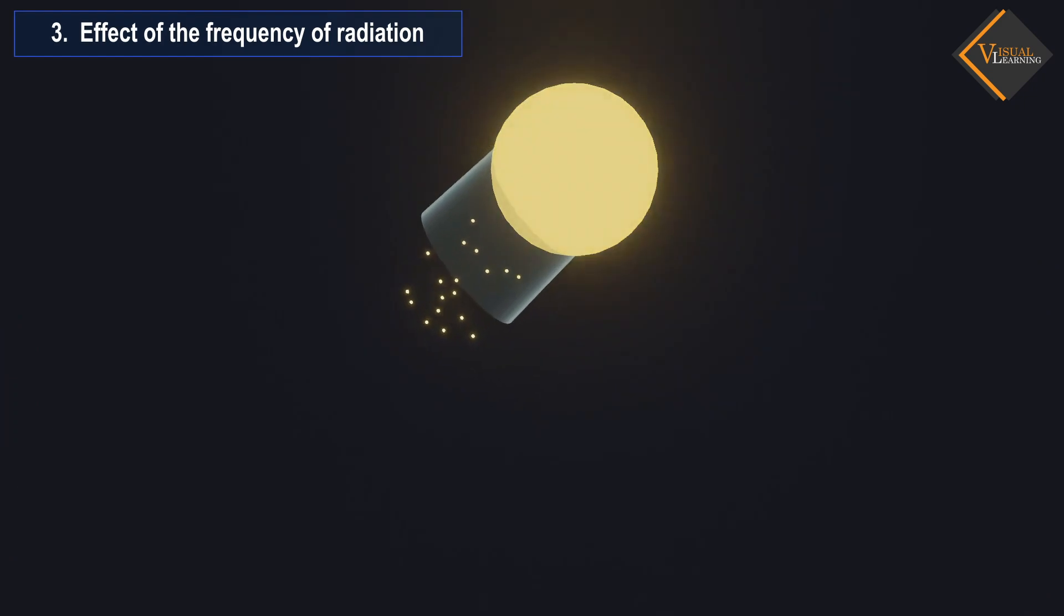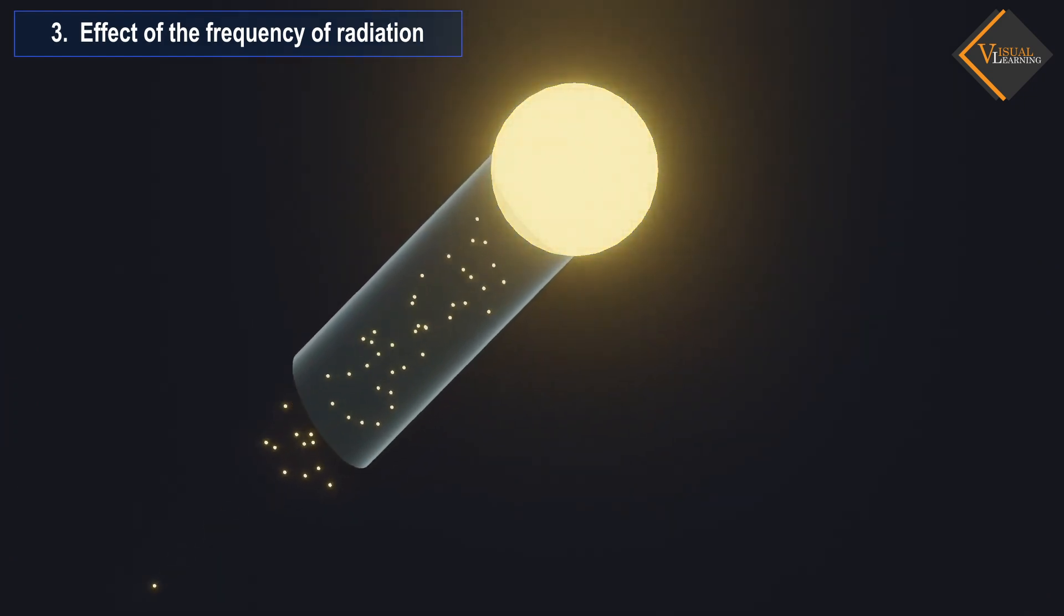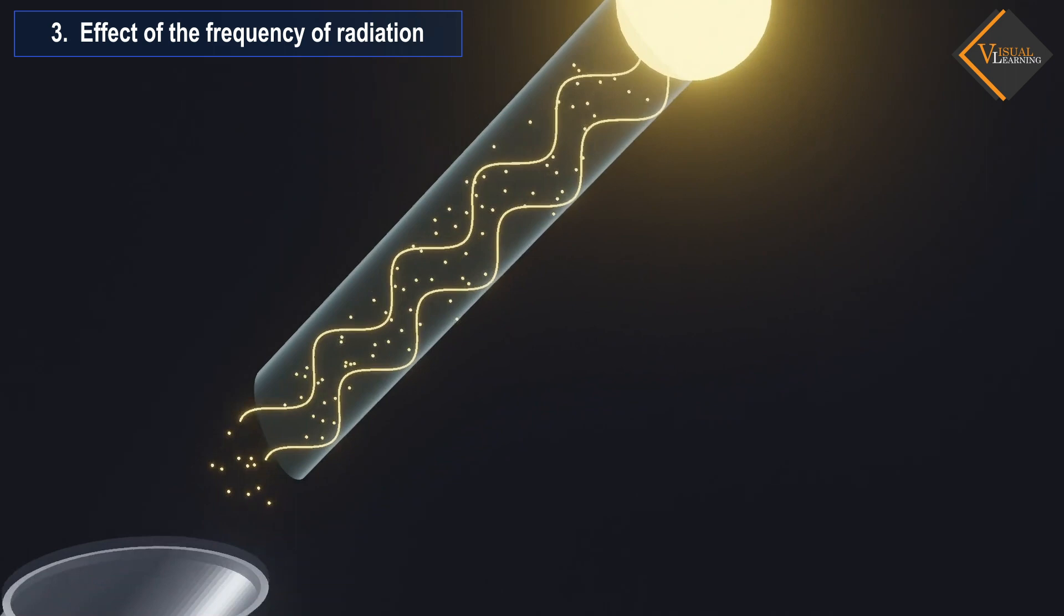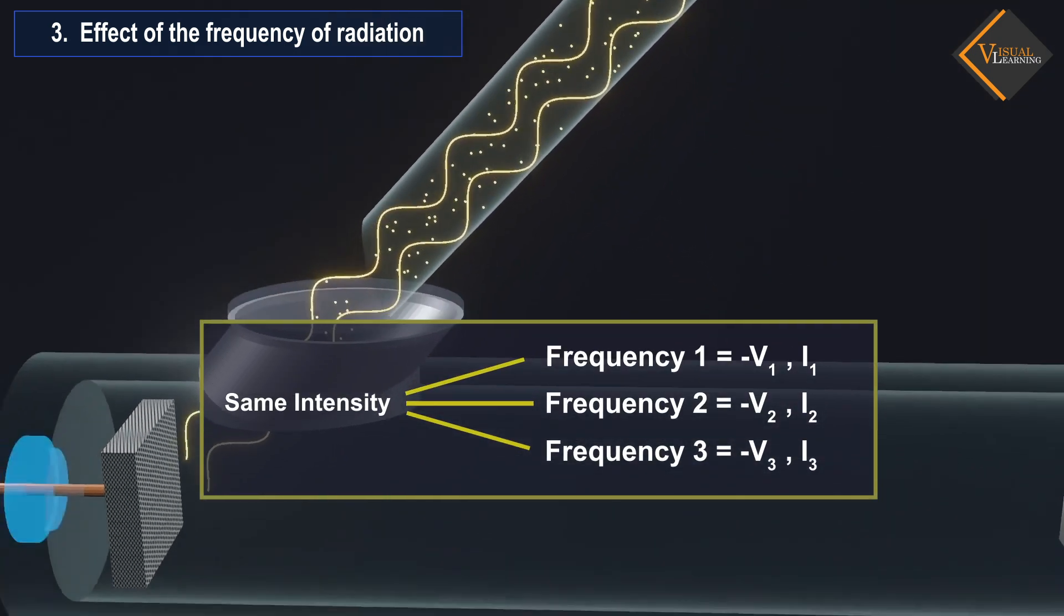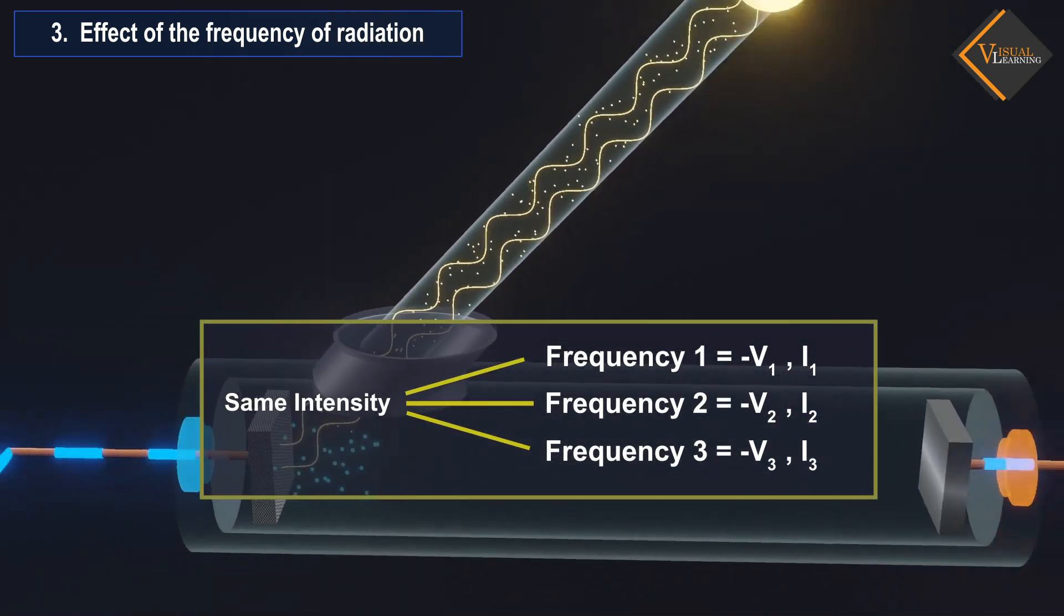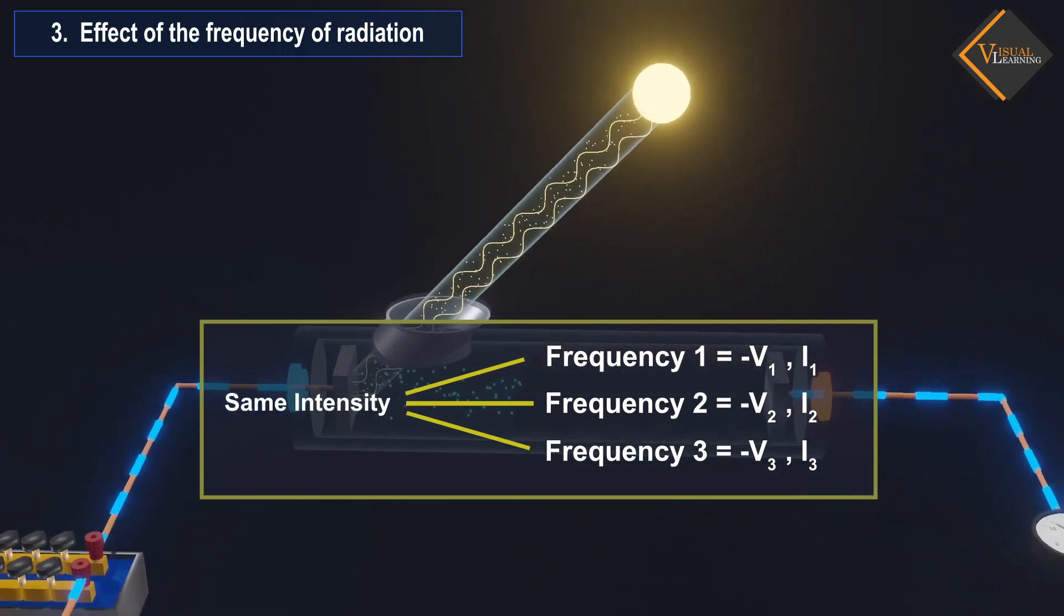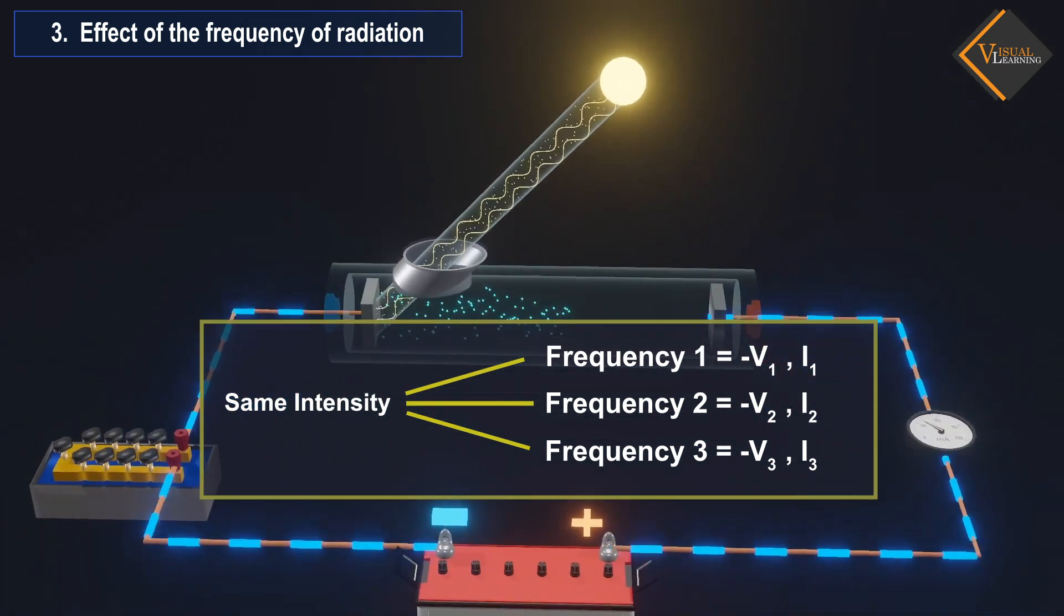Effect of the frequency of radiation: it was found in this experiment that when the same intensity of radiation is applied at different frequencies, the photoelectric current and the value of the stopping potential also vary.